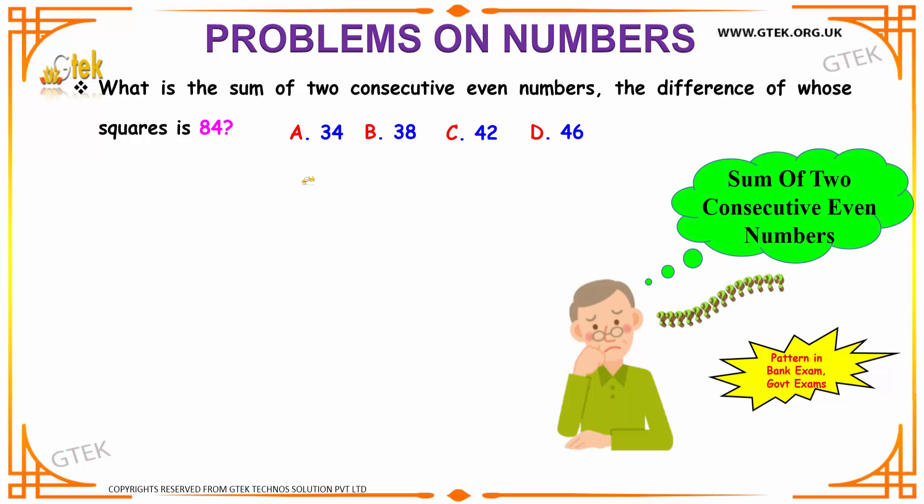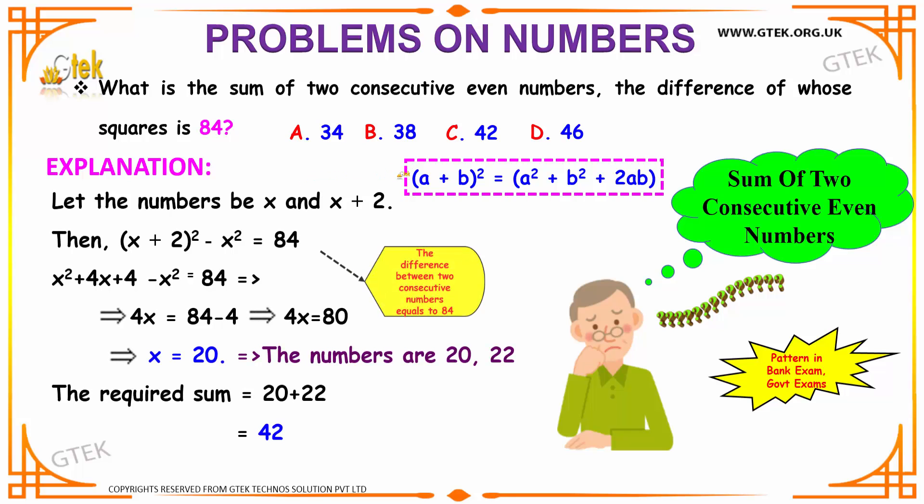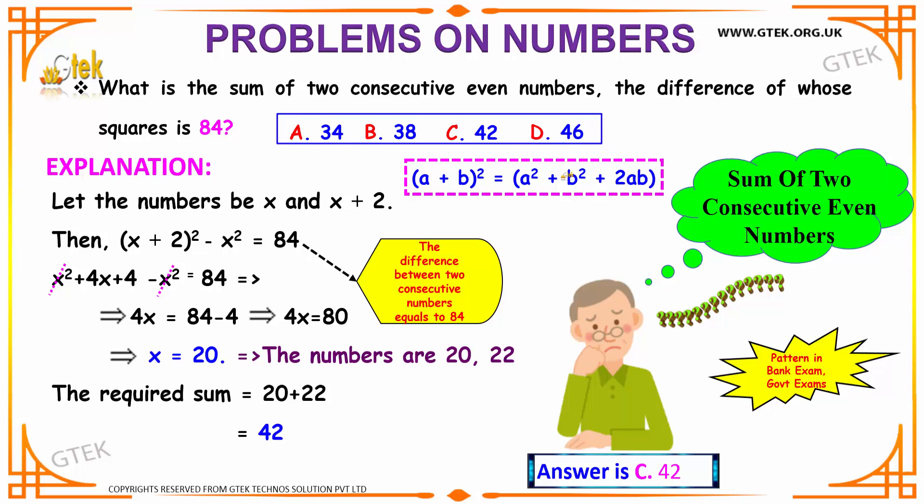What will be the sum of two consecutive even numbers and the difference of the squares of the numbers is given to be 84? Let us see our options over here. Let us see how to solve this.